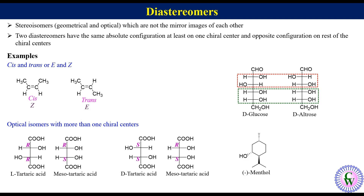Next is the pair of D-menthol and minus-isomenthol. These are also optical isomers but not mirror images of each other, so these are diastereomers. Looking at their configurations, both have the same configurations at C1 and C2 while opposite configurations at C5, confirming they are diastereomers.